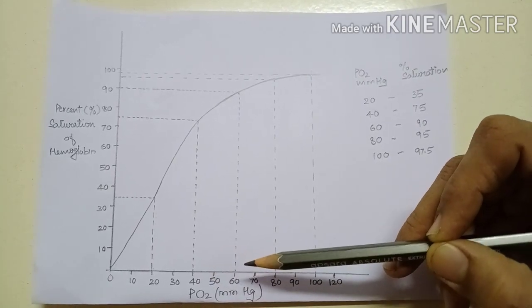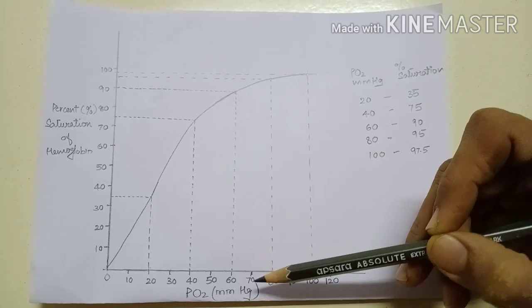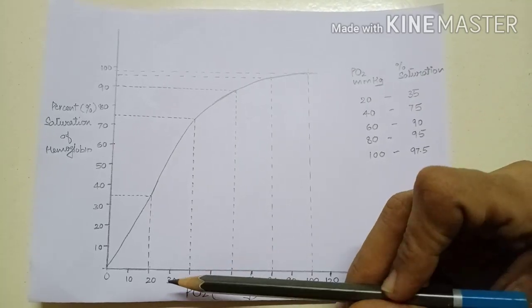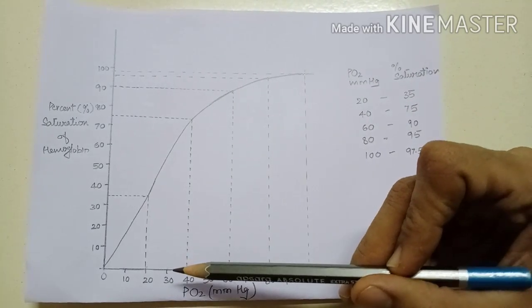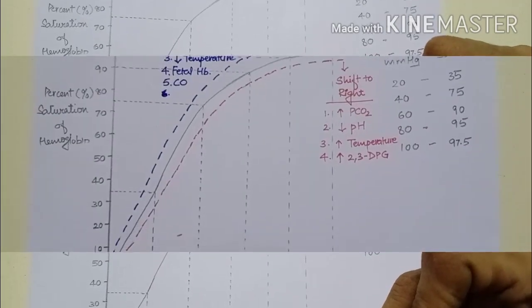When tissue PO2 rises above 40 mmHg, oxygen would not be released from hemoglobin. When tissue PO2 falls below 40 mmHg, oxygen is released from hemoglobin.